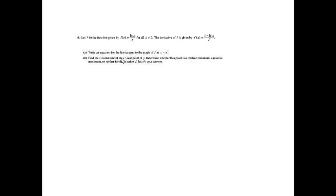Let f be the function given by f of x equals ln(x) over x for all x greater than zero. The derivative of f is given by f prime of x equals 1 minus ln(x) over x squared.